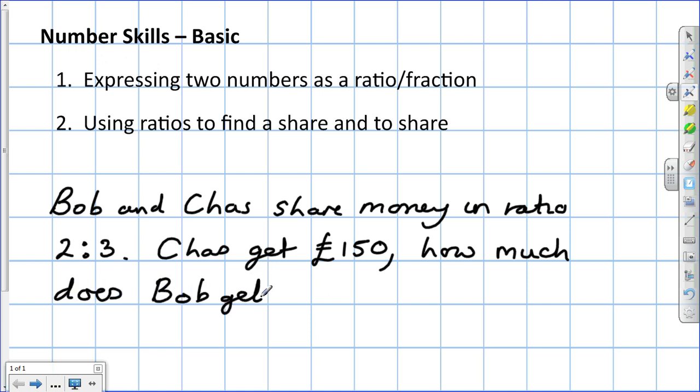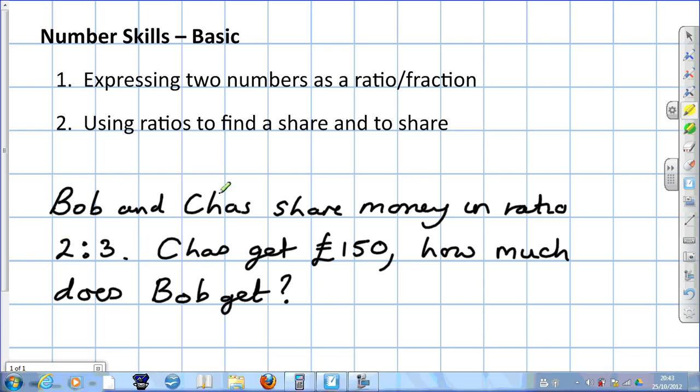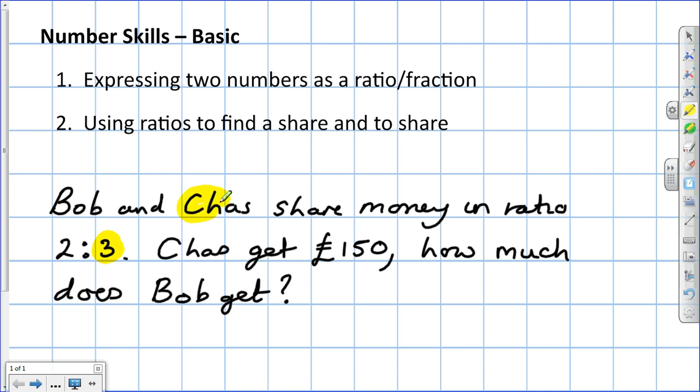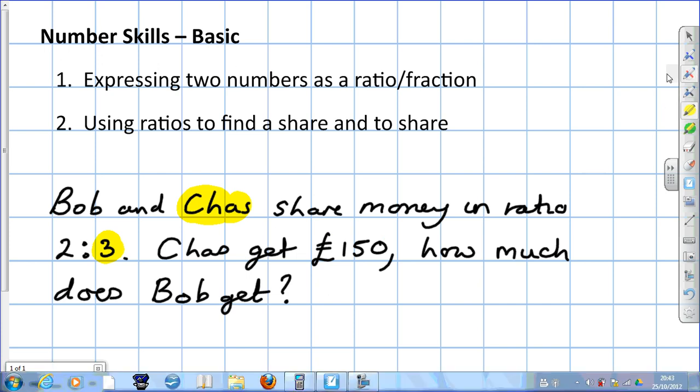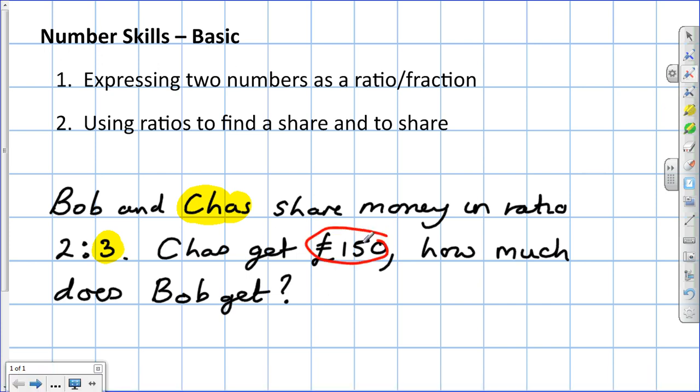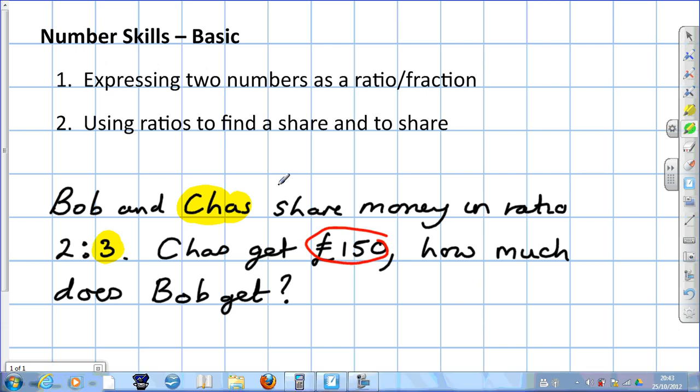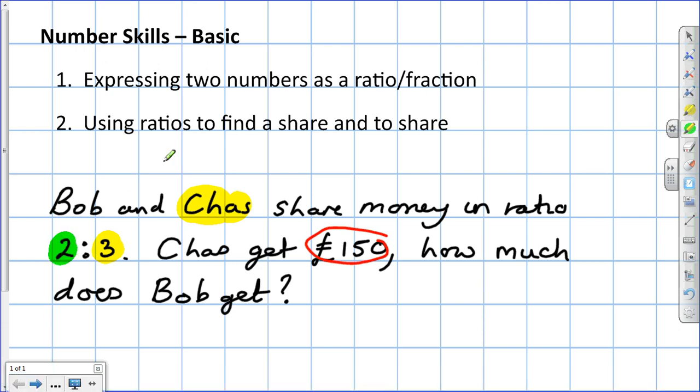Here's a straightforward way of doing it. We have to remember that the numbers in the ratio are in the same order as the names or other things mentioned. We know that Chaz is the second person mentioned and he gets 3 shares. He also gets 150 pounds. We're trying to find how much Bob gets.